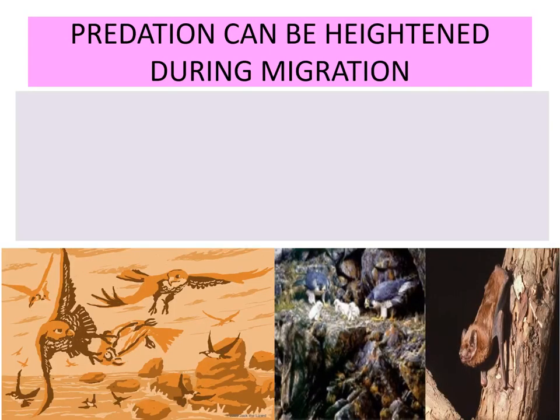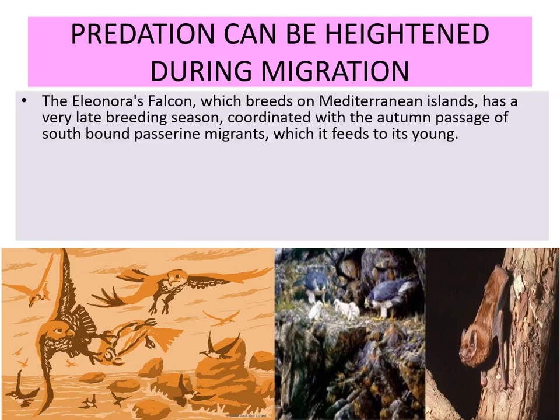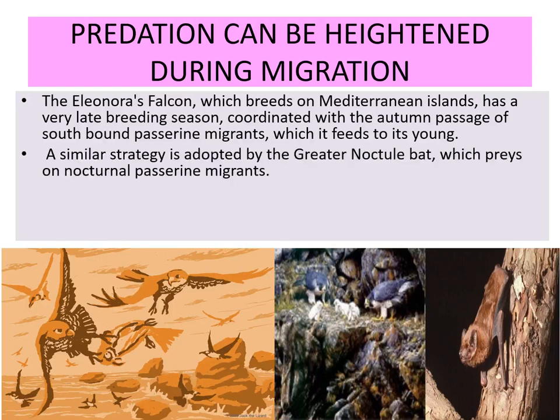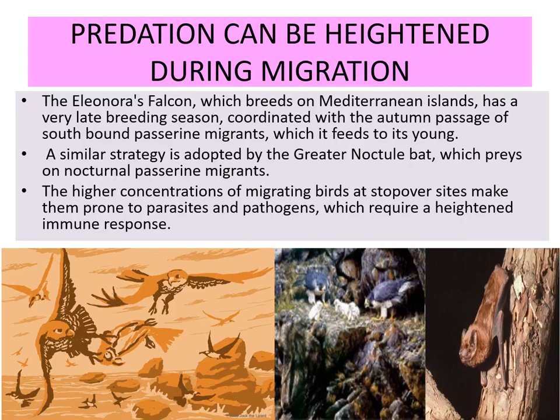Predation can be heightened during migration. The Eleonora's falcon, which breeds on Mediterranean islands, has a very late breeding season coordinated with the autumn passage of southbound passerine migrants, which it feeds to its young. A similar strategy is adopted by the greater noctule bat, which preys on nocturnal passerine migrants. The higher concentration of migratory birds at stopover sites also makes them prone to parasites and pathogens, requiring a heightened immune response.